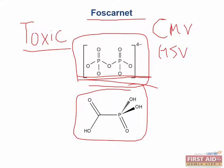Foscarnet works by inhibiting viral DNA and RNA polymerases by occupying the pyrophosphate binding site of the polymerase. Thinking back to our enzymatic biochemistry, Foscarnet is working by competitive inhibition because it resembles the substrate structure and competes for the enzyme binding site on the polymerases.